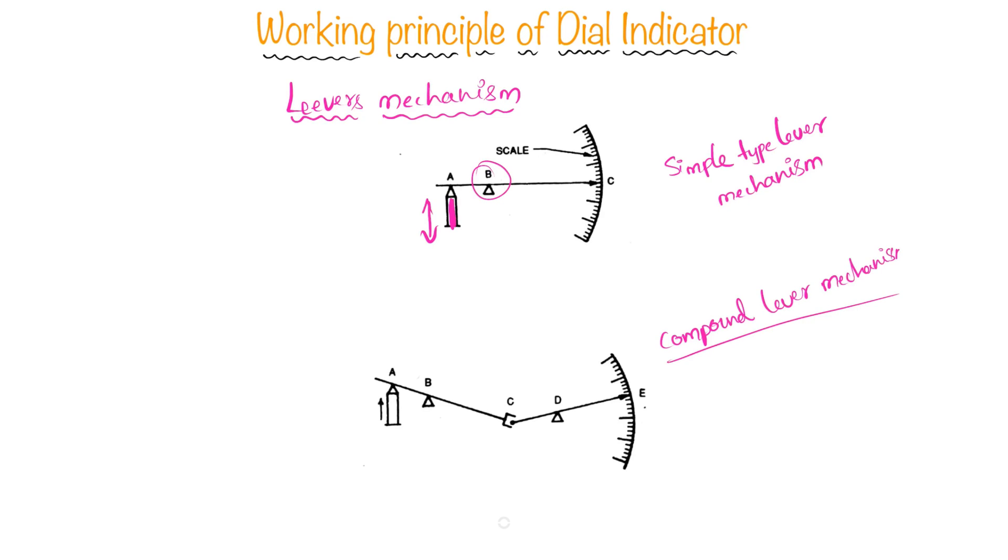This is compound lever mechanism. In this, there are multiple levers connected with the help of a fork joint. This is called a fork joint and here this is the plunger and it can move linearly.